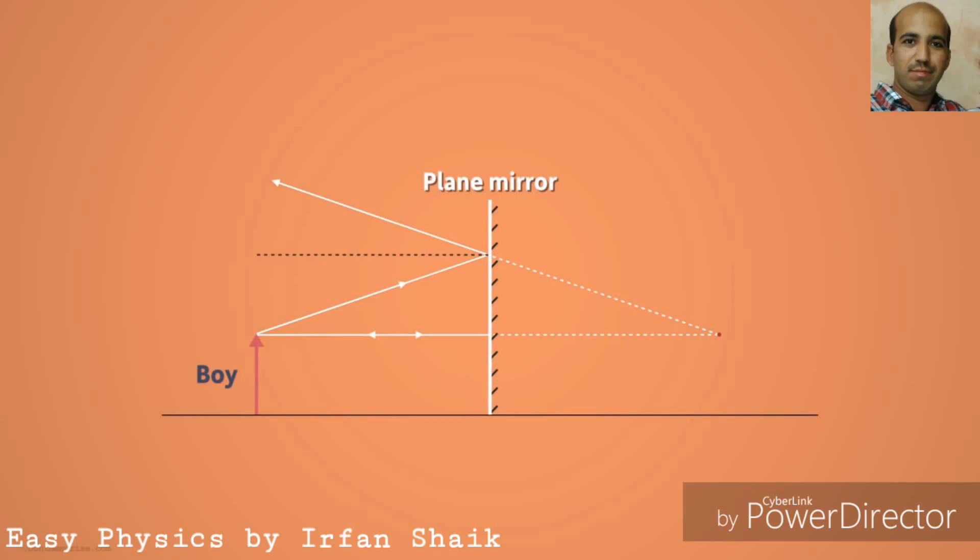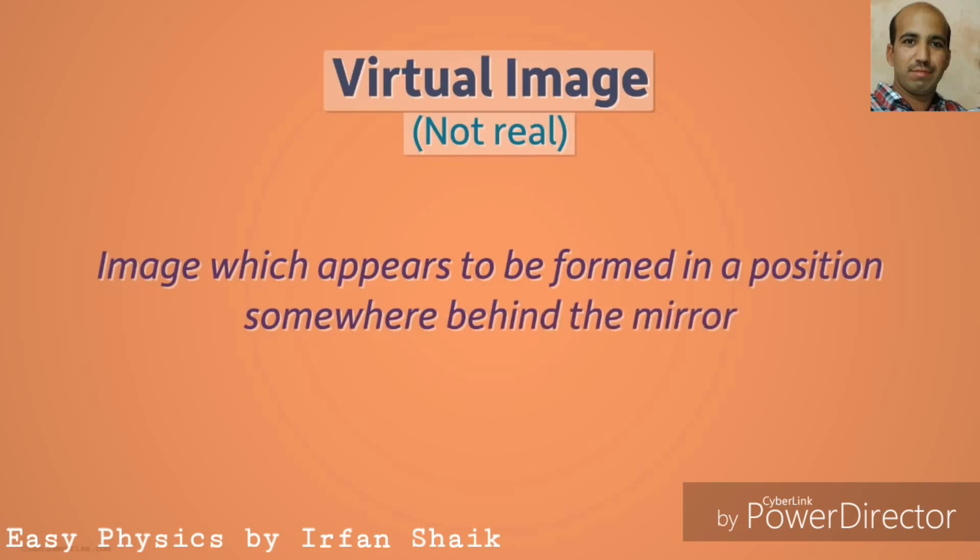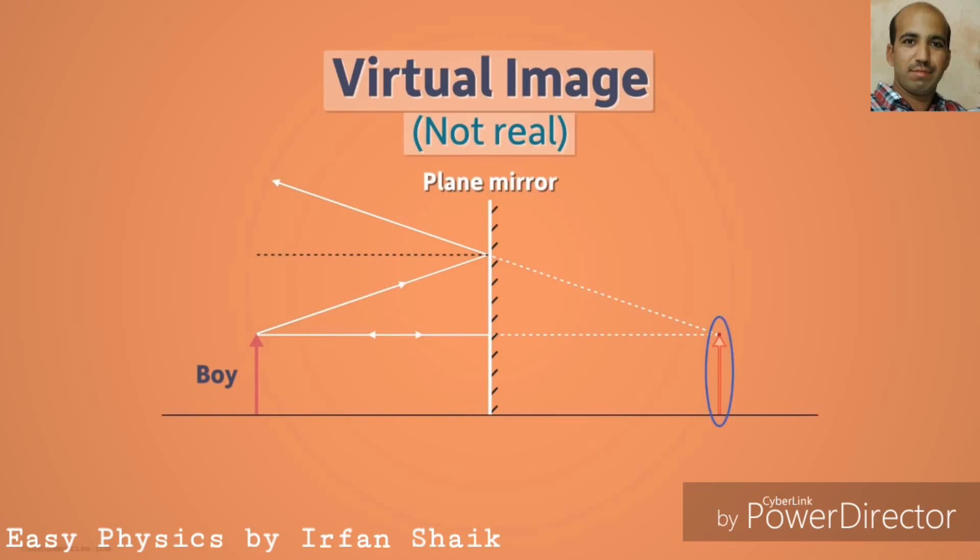Here, the image is formed when reflected rays are extended backwards. This image is called a virtual image. Let us try to know the definition of a virtual image: a virtual image is one which appears to be formed in a position somewhere behind the mirror. Every plane mirror forms virtual images.